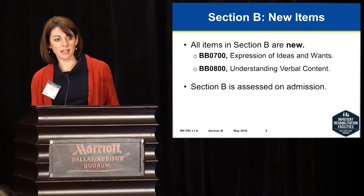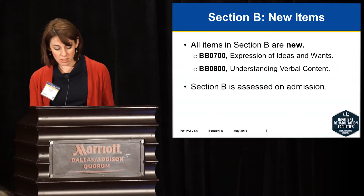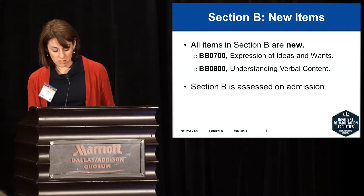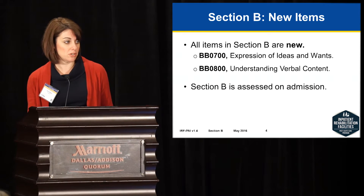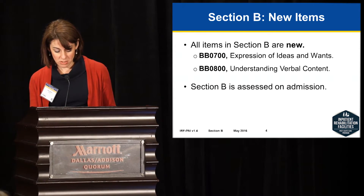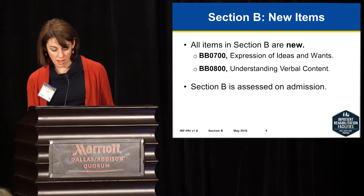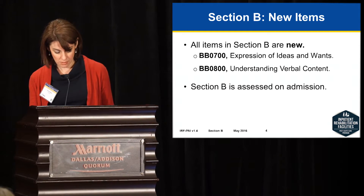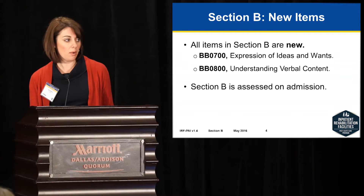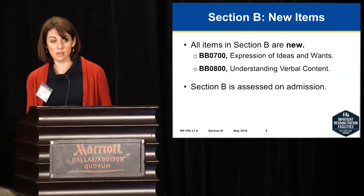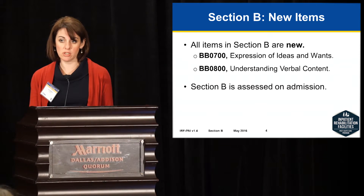All items in Section B are new. This section includes expression of ideas and wants and understanding of verbal content. These items are only assessed on admission because they are used as risk adjusters for the functional quality measures. Currently, you assess a patient's ability to comprehend and express both basic wants and needs as well as complex information for other required documentation. Remember, for Section B, we code, and for other required documentation, we score.